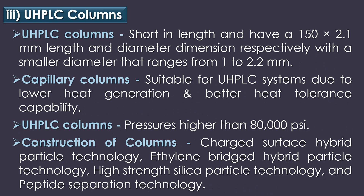UHPLC columns are short in length with 150 x 2.1 mm dimensions, and a smaller diameter ranging from 1 to 2.2 mm. The UHPLC column can operate with pressure higher than 80,000 PSI. Charged surface hybrid particle technology, ethylene bridged hybrid particle technology, high strength silica particle technology and peptide suppression technology are most commonly used in the construction of UHPLC columns.